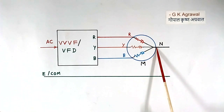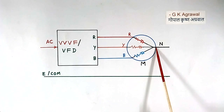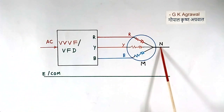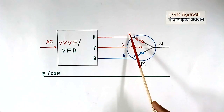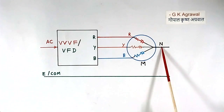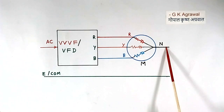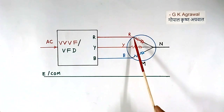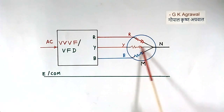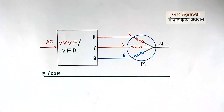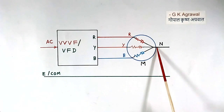This neutral has one more use. During production and testing, if the neutral is brought out, we can check individual windings. If the neutral is not brought out, then we cannot check — or it will be very difficult to check — the individual windings. We have used voltage or neutral measurement in one of our projects.